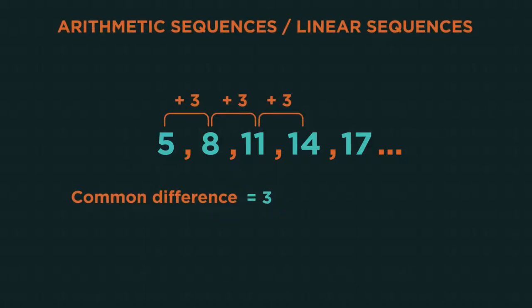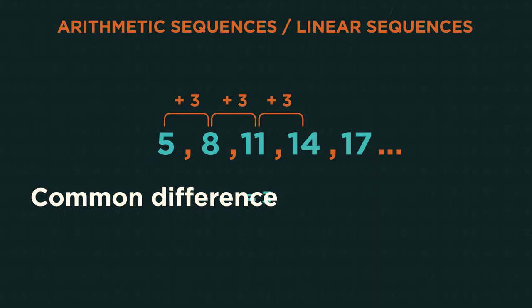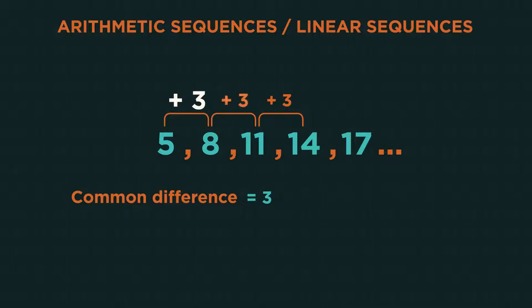Arithmetic sequences have a common difference. This means that they always go up by the same amount. So the common difference for this sequence is 3.